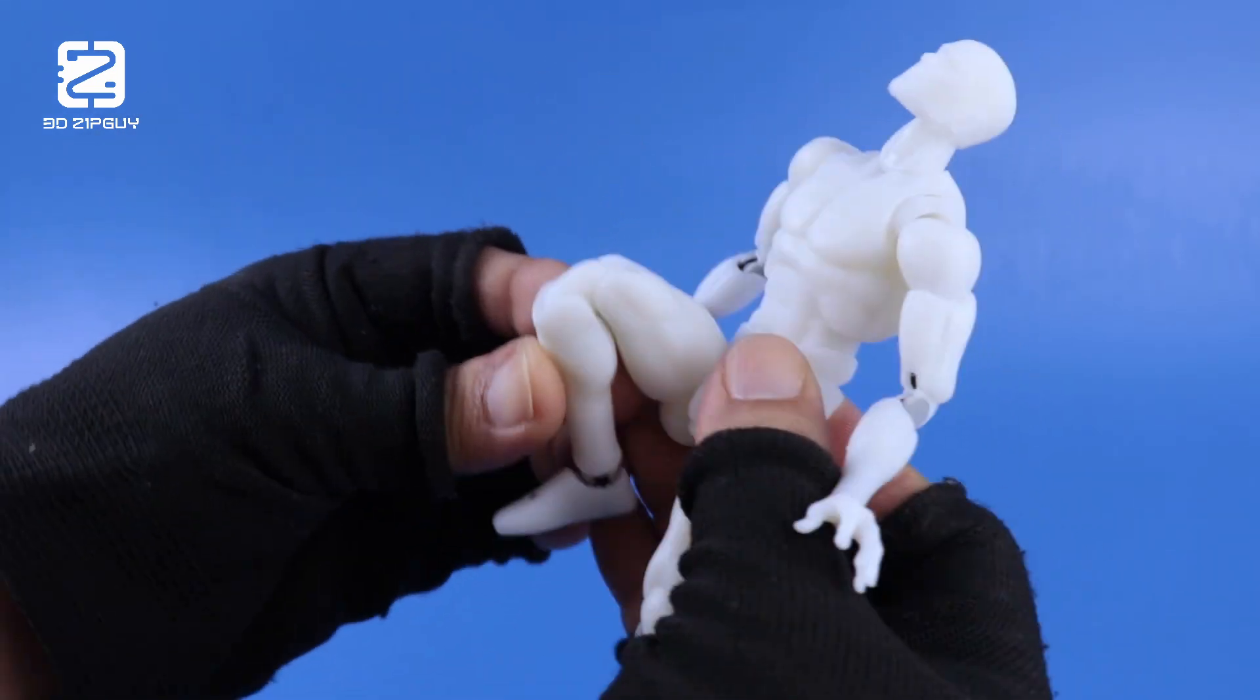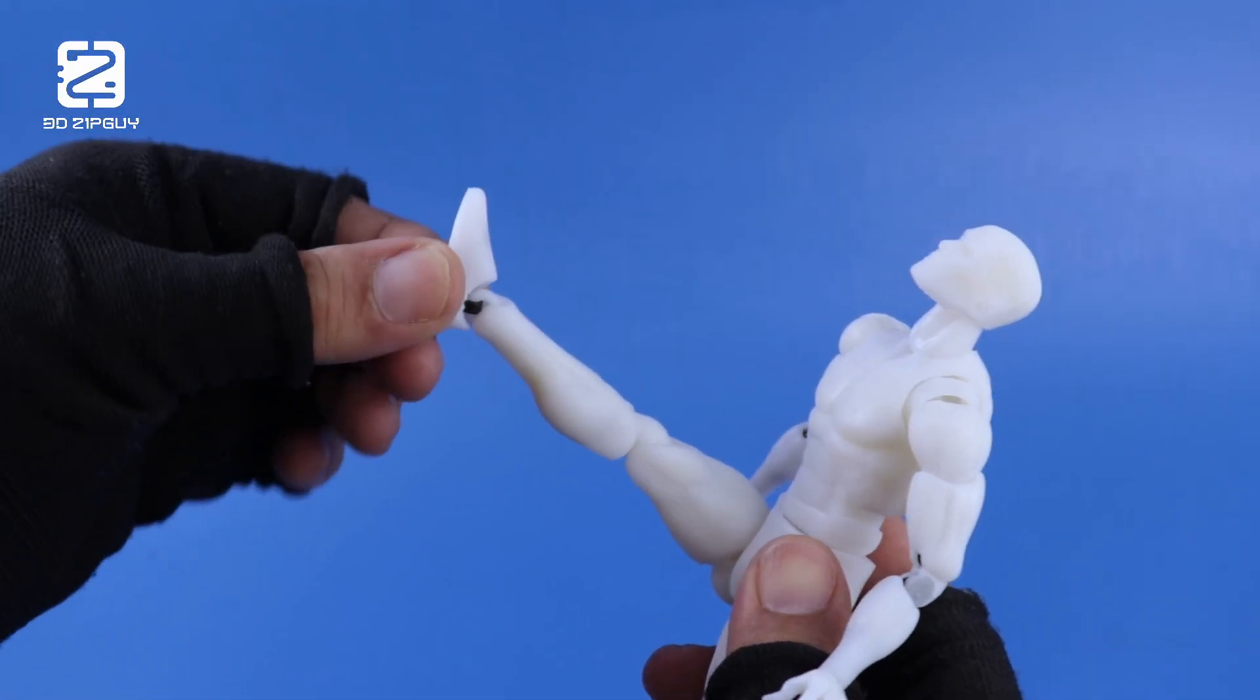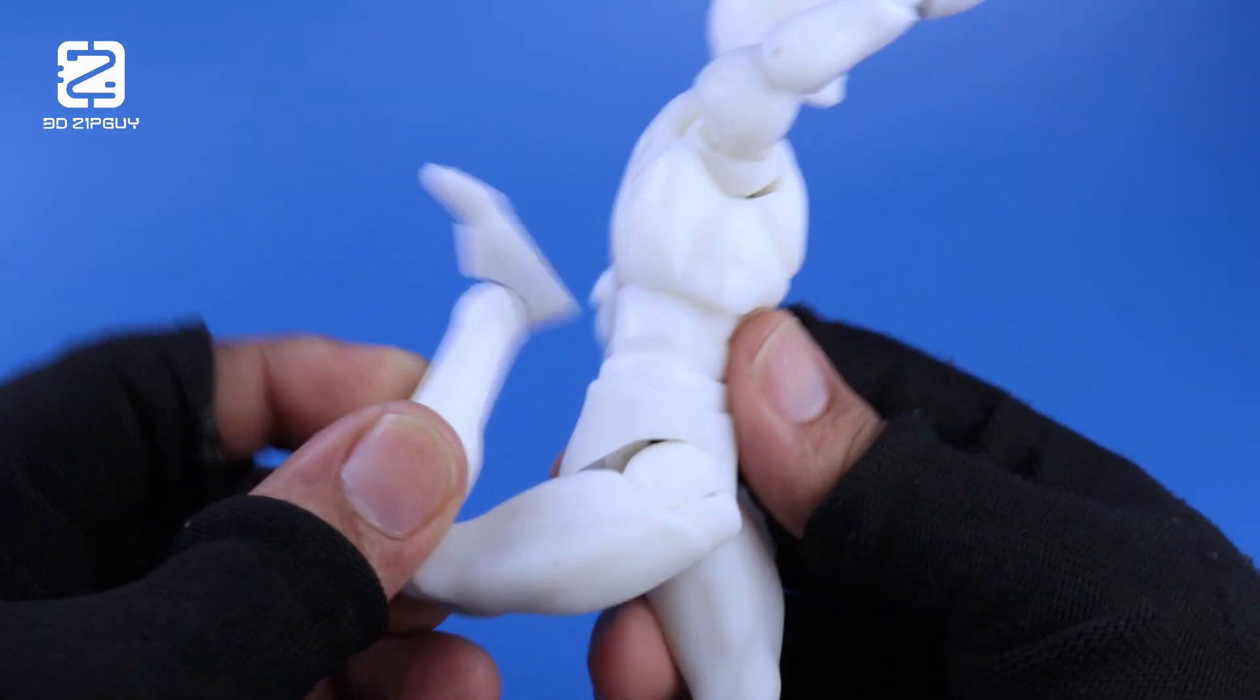Double knee, toe articulation. Foot moves up, down, swivel side to side. Can kick his own ass and his own kidneys.